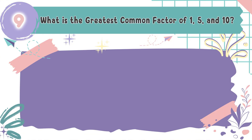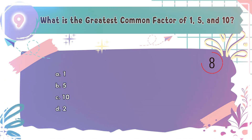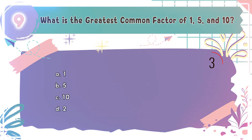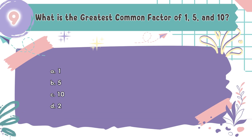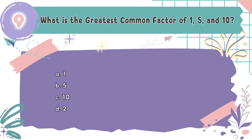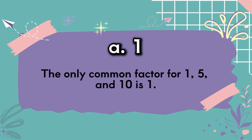Question number 9: What is the greatest common factor of 1, 5, and 10? The choices are A: 1, B: 5, C: 10, D: 2. The correct answer is A, 1. The only common factor of 1, 5, and 10 is 1.